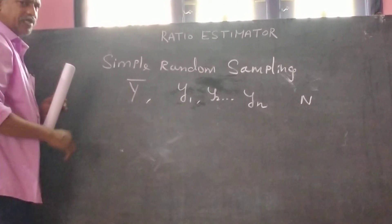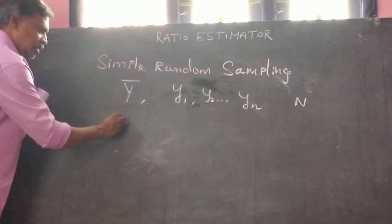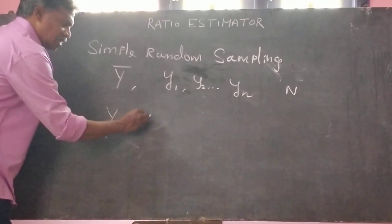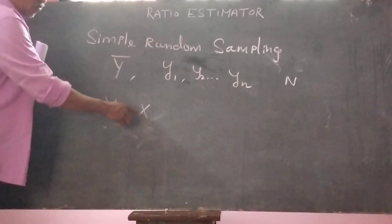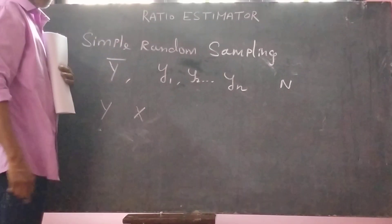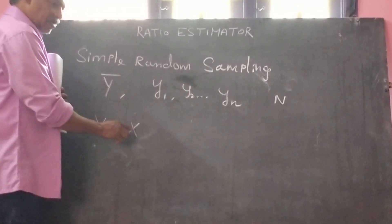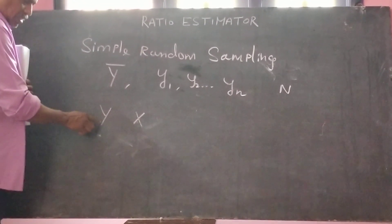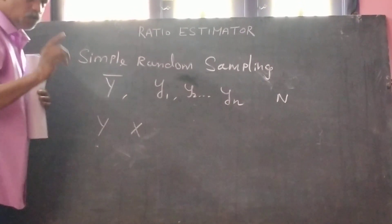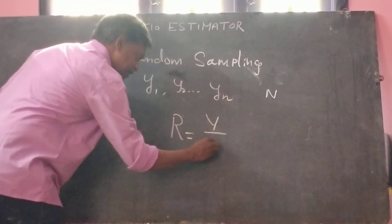In the ratio estimator, we may use two variables. One is called the main variable y, and another one is called the auxiliary variable x. Suppose the two variables are correlated. So based on the auxiliary variable information, we can estimate the population mean y bar of y.